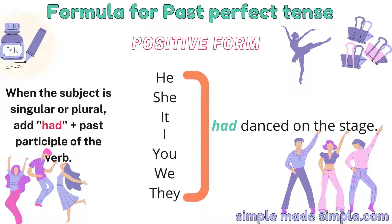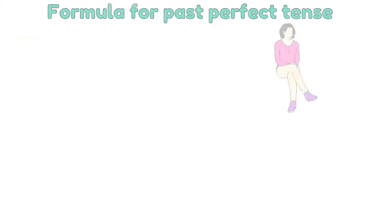For the positive form, regardless of whether the subject is singular or plural, you have to just add 'had' to your sentence and change the verb to the past participle form. For example: he had danced, she had danced, or they had danced.